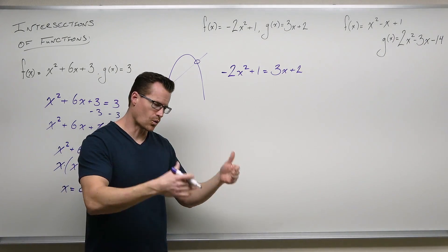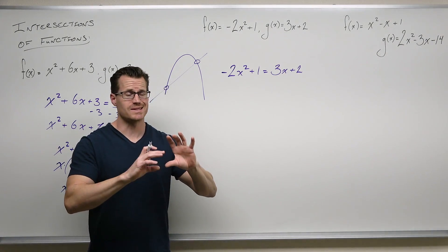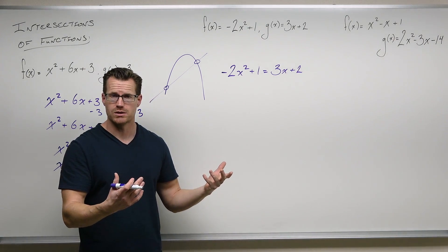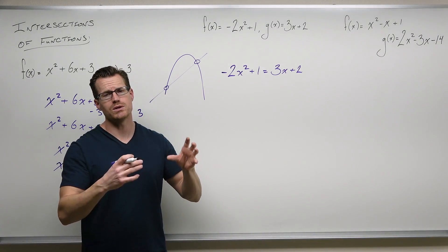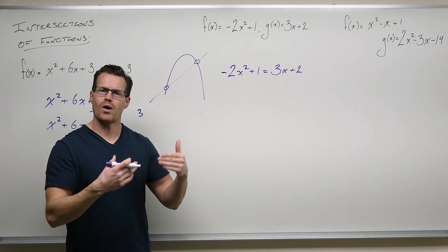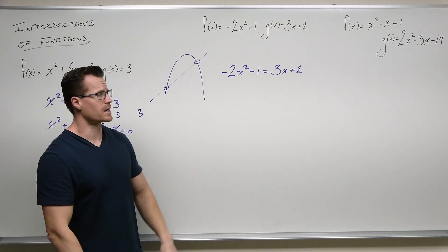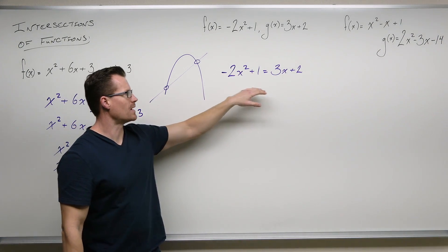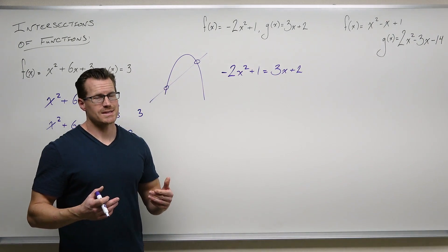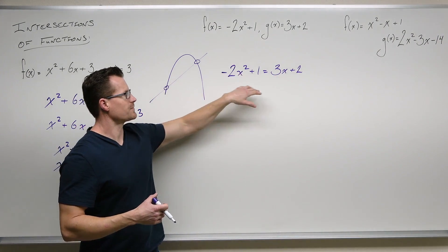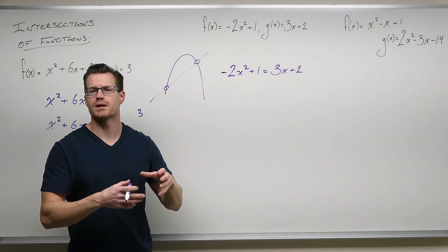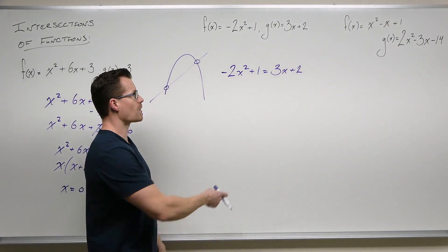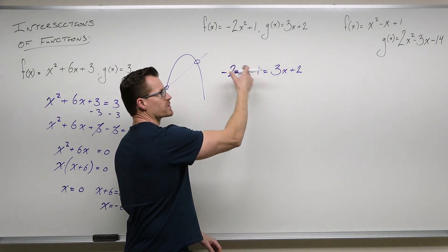So just do the same thing we've been doing: get everything on one side, get it in order, get the first term positive. What's the appropriate choice — should we move the stuff from the right to the left, or the left to the right? It seems better to move things from the left to the right so that our first term becomes positive. We want the x-squared term first because it has the largest power. So if we add 2x-squared and subtract 1.